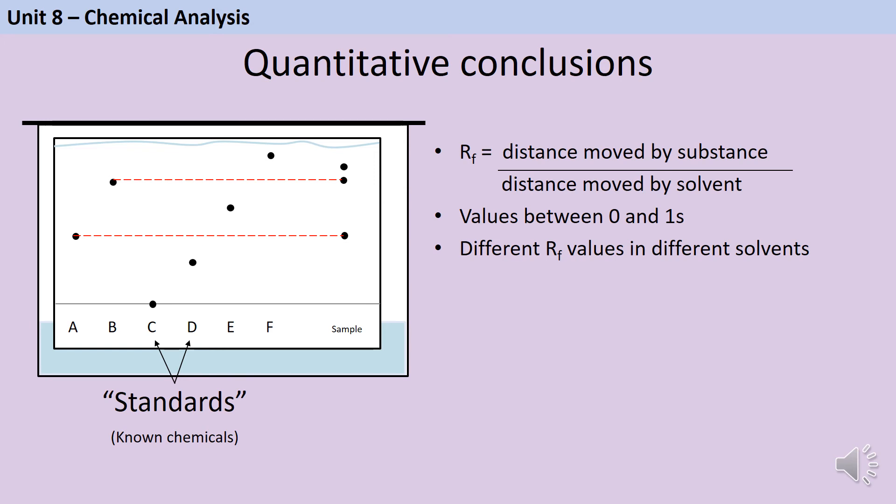So I could have a substance that has an RF value of 0.8 in water and it will always have an RF value of 0.8 in water, but if I put it in ethanol it might have a value of 0.7 instead. And that would be consistent for ethanol. If I did it with ethanol again I would get 0.7 again.